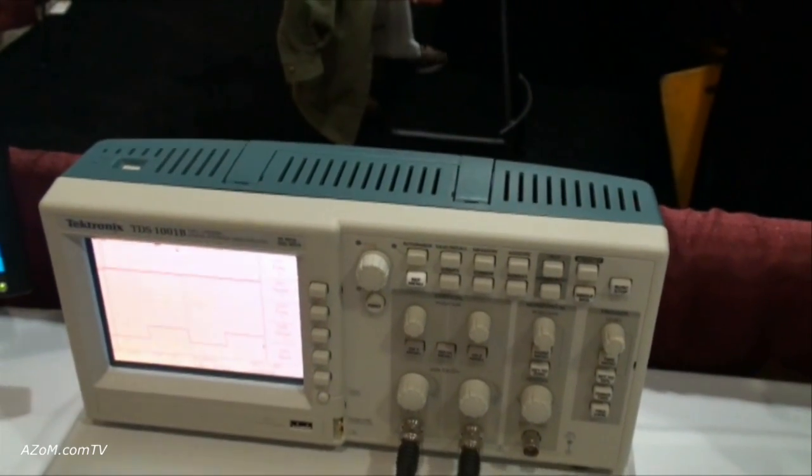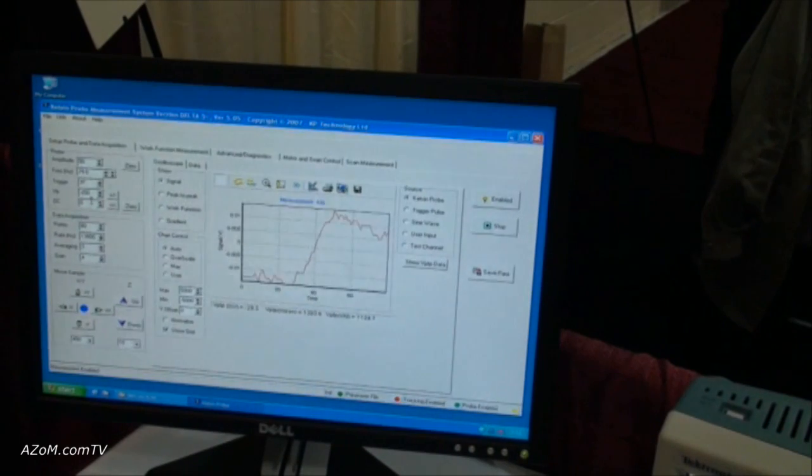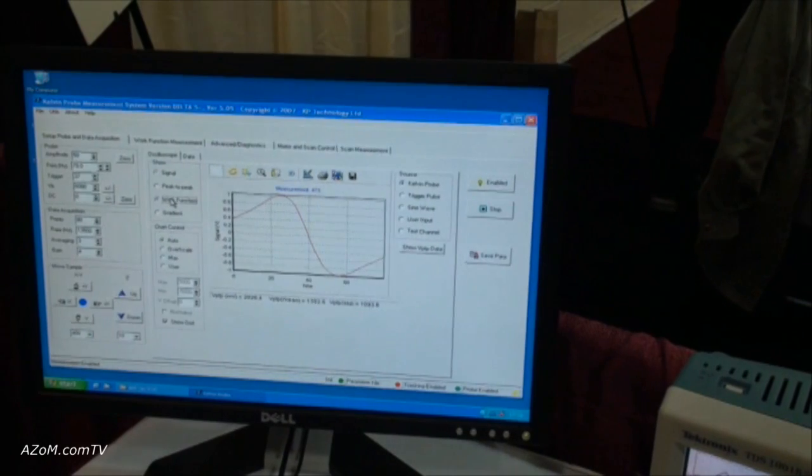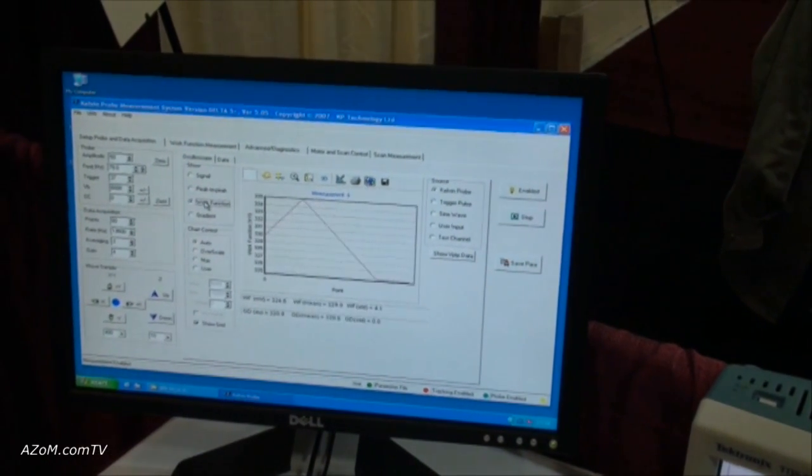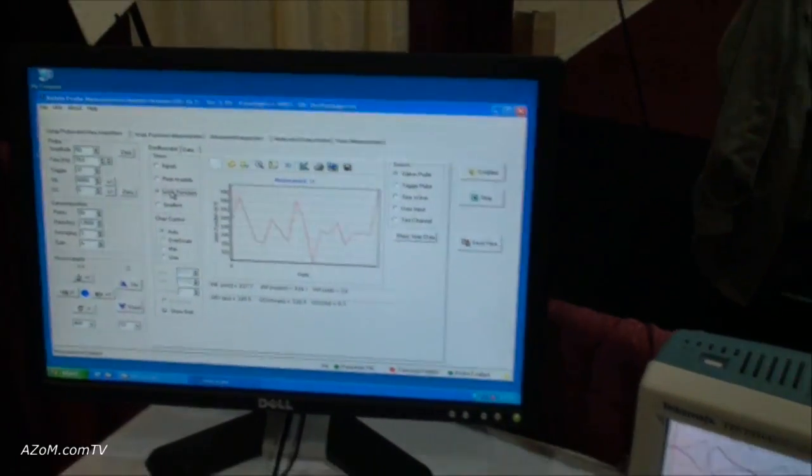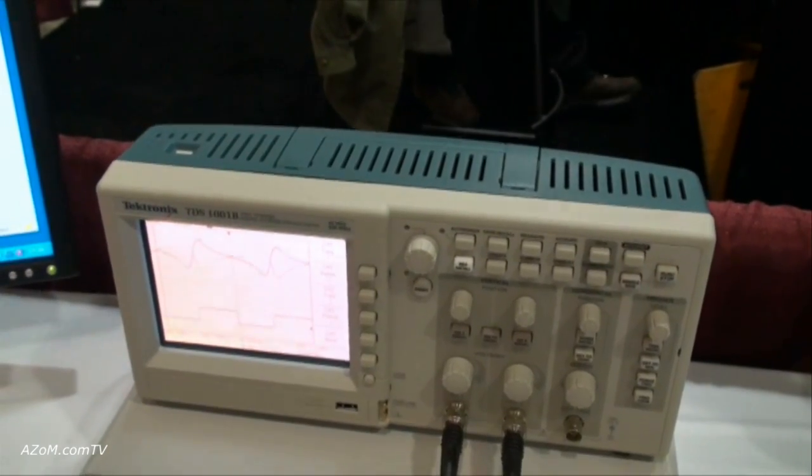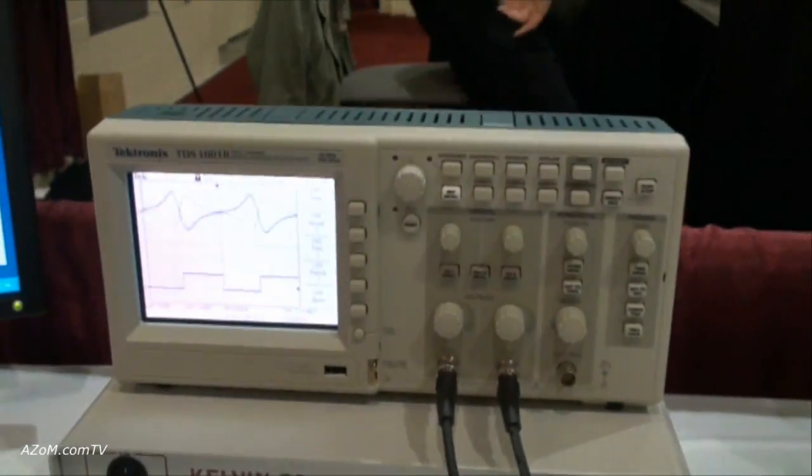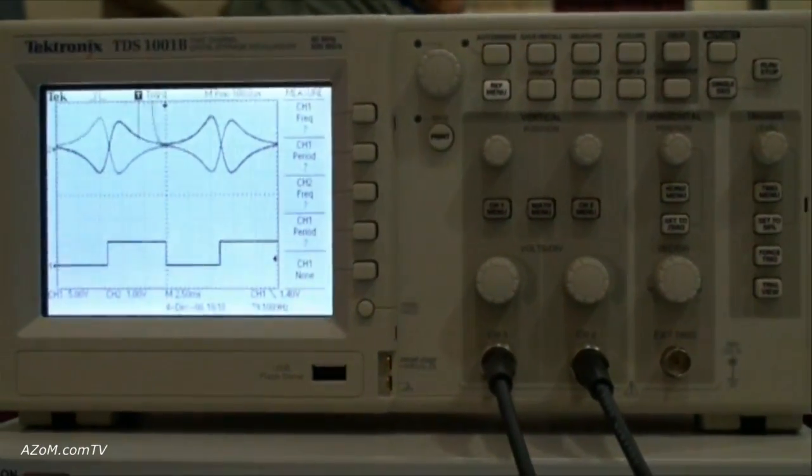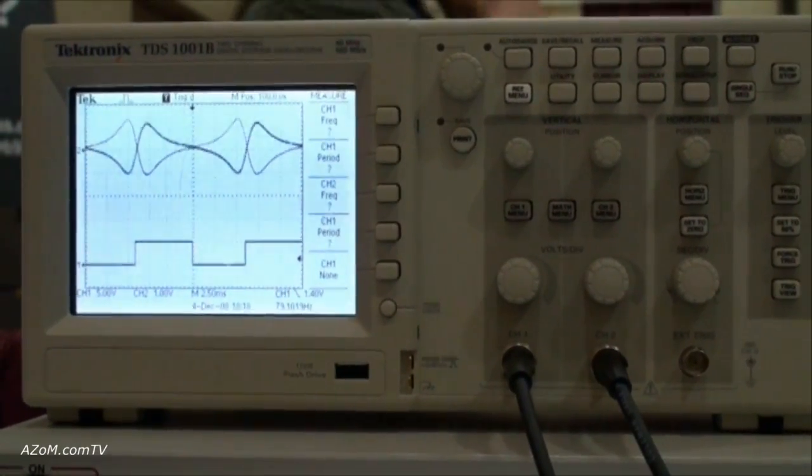The traditional Kelvin probe is a null field, but as you can see, it's a noisy method. I invented the off-null method where you measure on large signal heights. The computer calculates where zero will be through two measurements, and it can go quite fast. It can go up to a thousand measurements a minute. We're working in a conference hall here, so it's a little bit noisy with people going past, but normally you'd achieve one to three millivolt resolution, which is perfectly adequate for most surfaces.